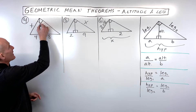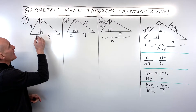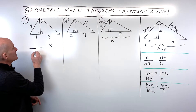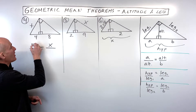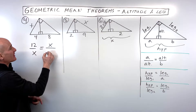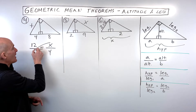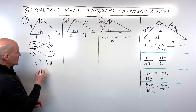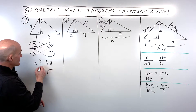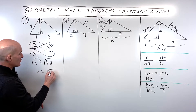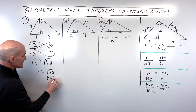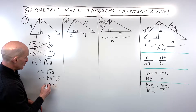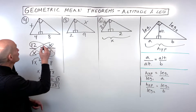For number four, leg x is the geometric mean of the whole hypotenuse — adding the parts to get 12 — and the part of the hypotenuse adjacent to that leg, which is 4. Cross multiplying gives x squared equals 48. Taking the square root: x equals √48 = √(16 × 3) = 4√3 for the length of the leg.